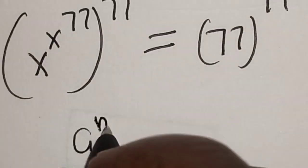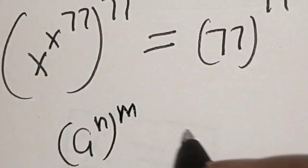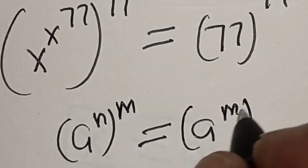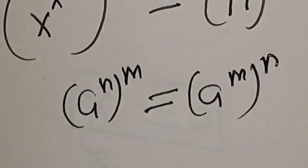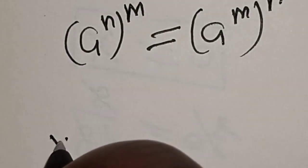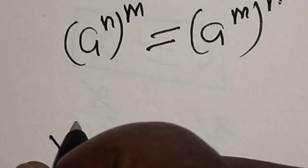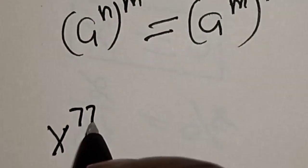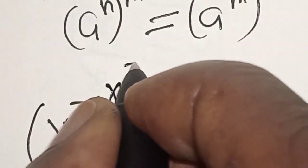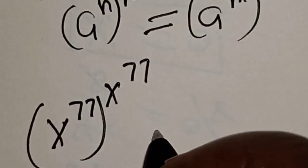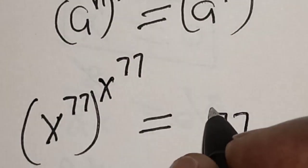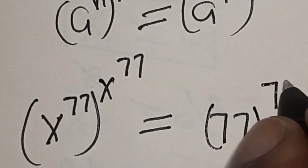Now remember that if you have a raised to power n raised to power m, this is equal to a raised to power m raised to power n. Applying this rule, we get x raised to power 77 raised to power x raised to power 77, which is equal to 77 raised to power 77.